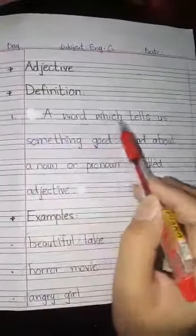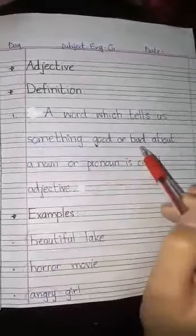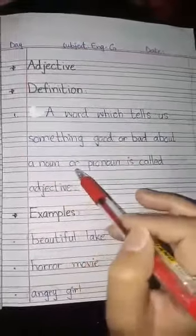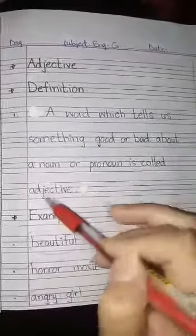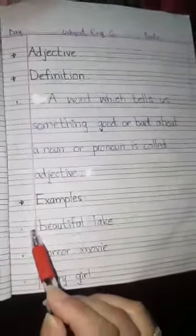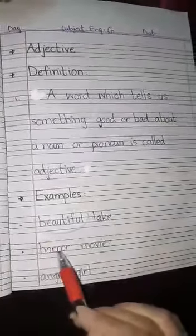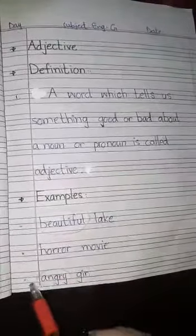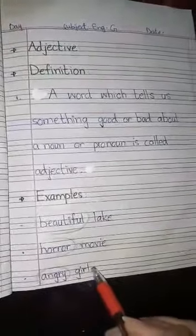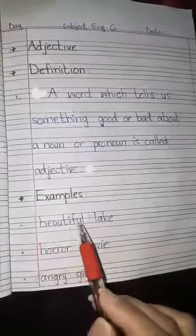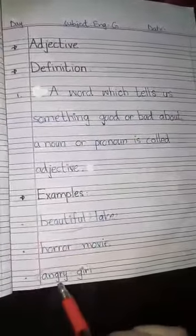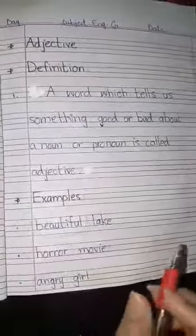The definition is: a word which tells us something good or bad about a noun or pronoun is called an adjective. Examples: number one is 'beautiful lake', number two is 'horror movie', number three is 'angry girl'. Circle all the adjectives in those examples — circle beautiful, horror, and angry. They are adjectives here.